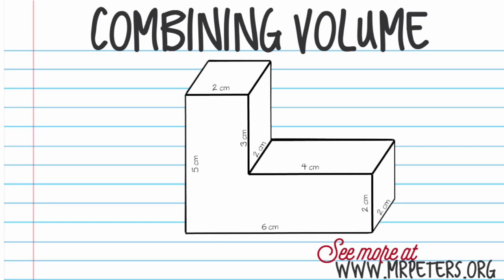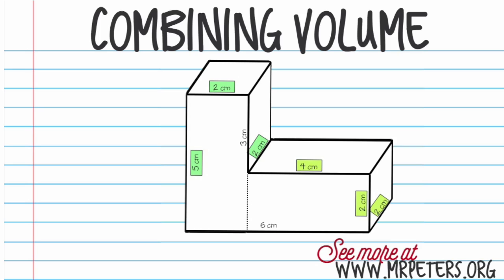What happens when you're asked to find the volume of a figure like this? You can't just start multiplying all the numbers together and hope to come up with the volume, because our formula says volume equals length times width times height. We can't figure out one height here — for instance, we have five centimeters here and two centimeters. So what do you do? To do this problem, you have to actually break them up into two smaller solids.